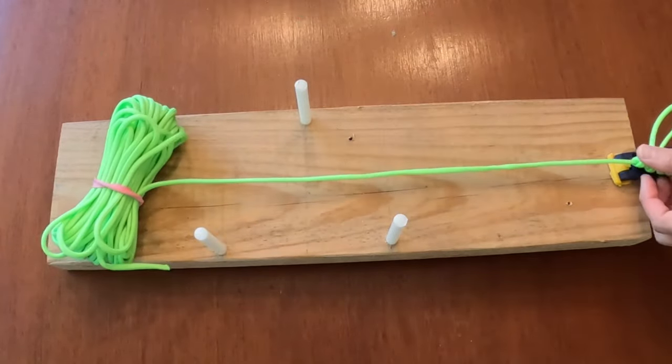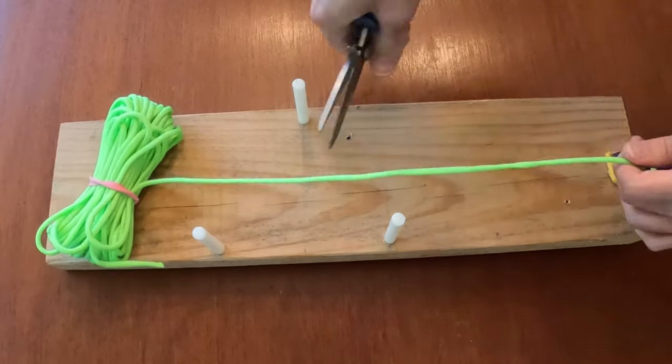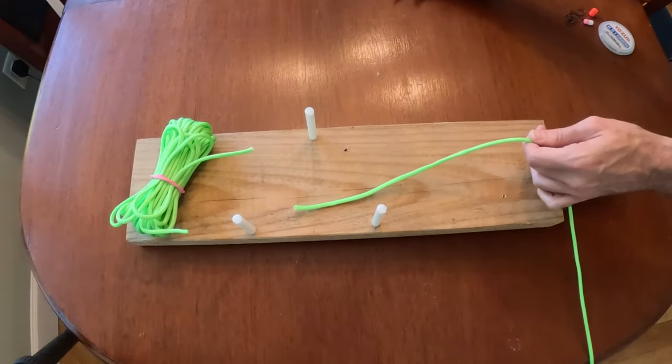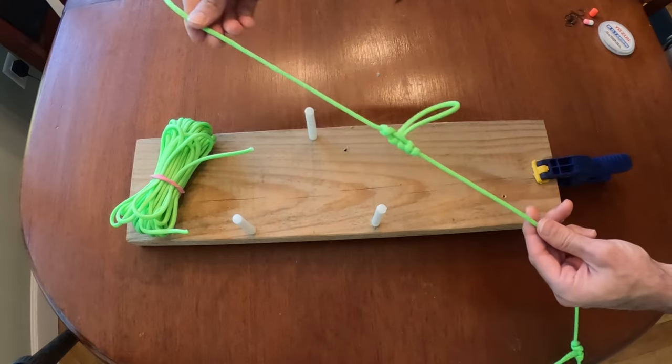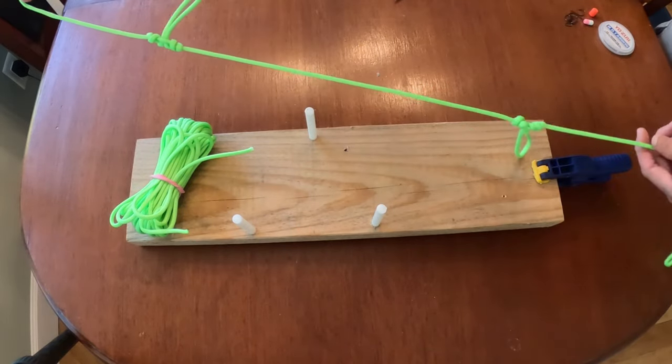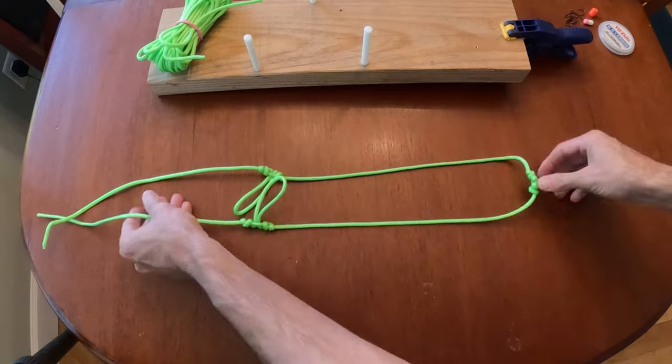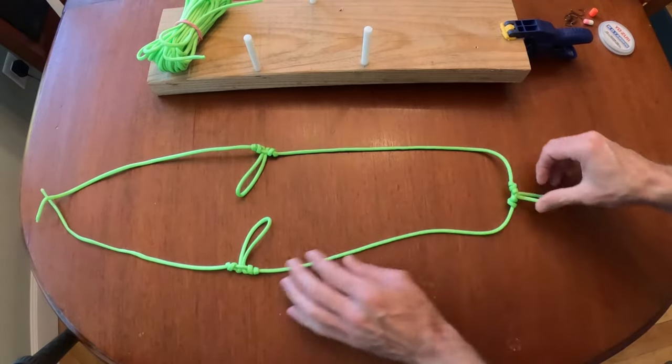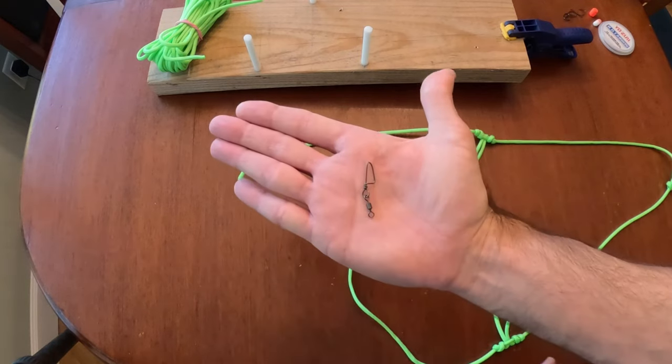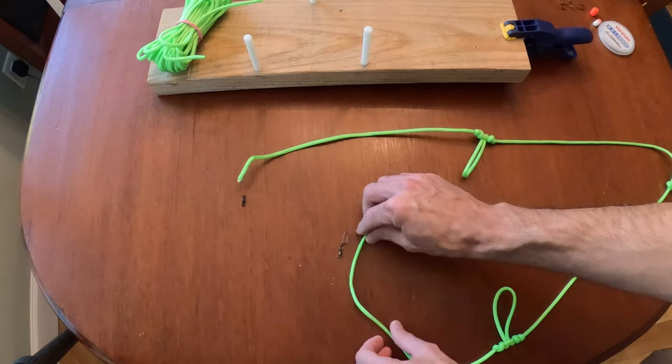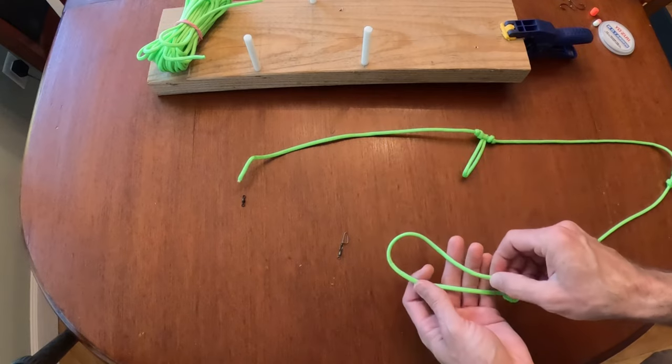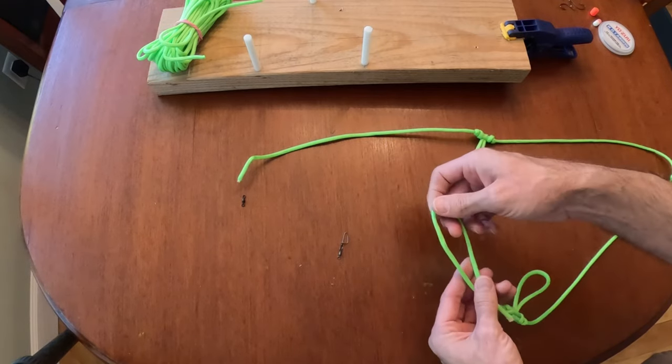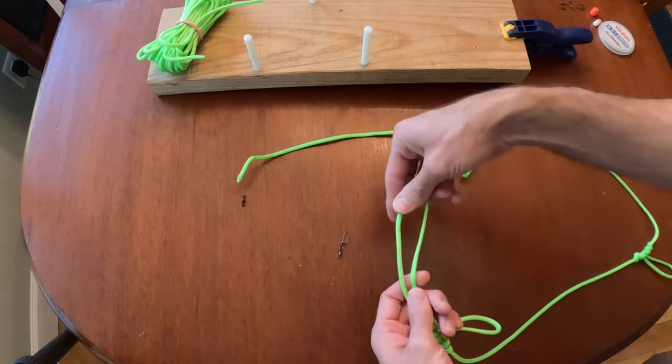Now that we have our three dropper loops we want to tie a loop at the end for the sinker. This is where you can do one of two things. You can use a snap swivel or you can tie a loop, personal preference here. The loop is cheaper but can sometimes be harder to take the sinker off when it's sandy.